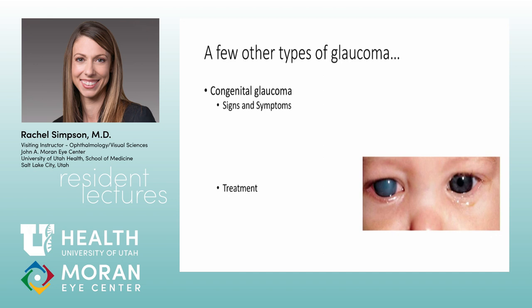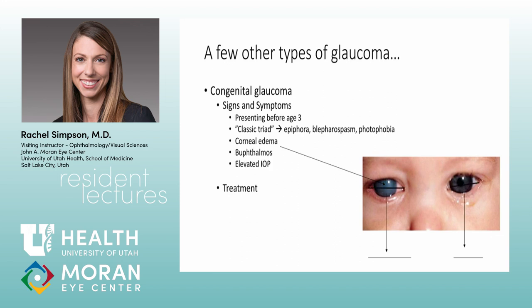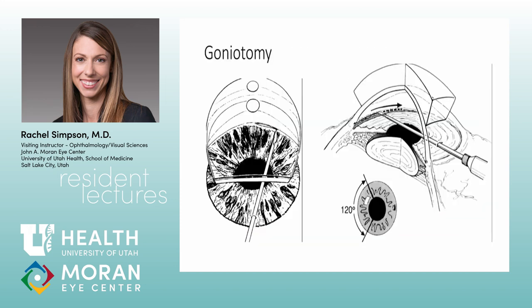Congenital glaucoma — a lecture for another day, but the classic triad is epiphora, blepharospasm, and photophobia. Any baby presenting with those findings, corneal clouding, or new tearing: think glaucoma first. Buphthalmos is classic but not required for the triad. These patients are often treated for nasolacrimal duct obstruction and the glaucoma is missed — don't call it an NLDO until you've ruled out glaucoma. Important: babies cannot receive alpha-agonists because it will depress their CNS and cause respiratory arrest. Drops are a temporary measure; definitive treatment is surgical with goniotomy or trabeculotomy.